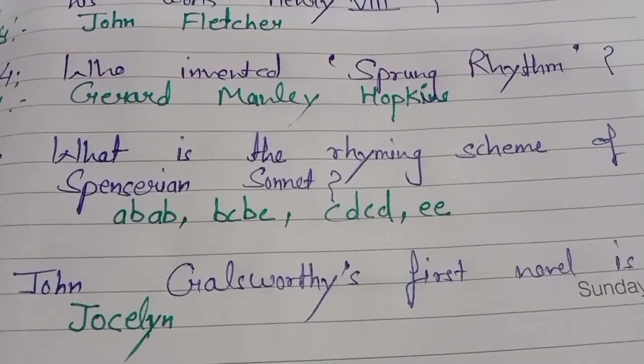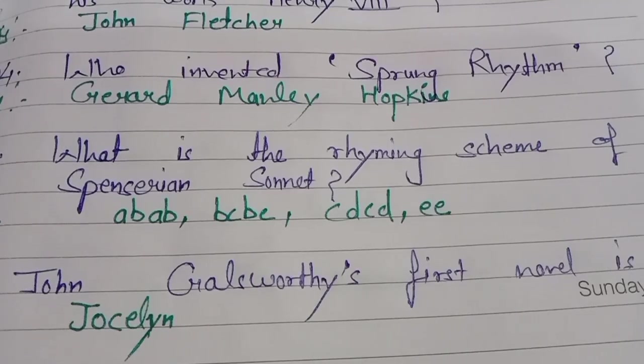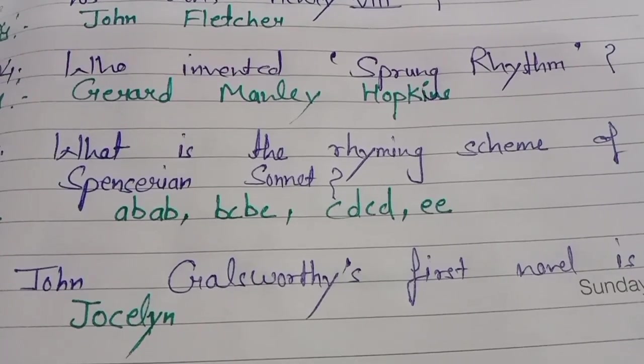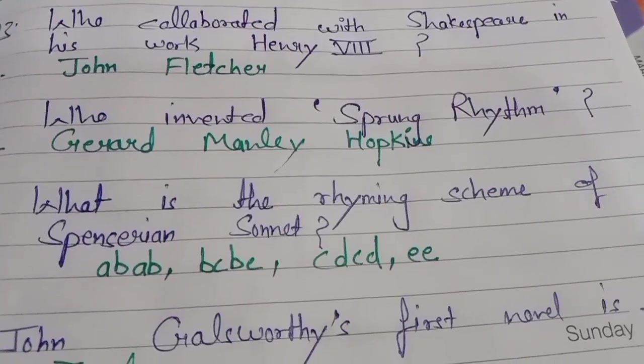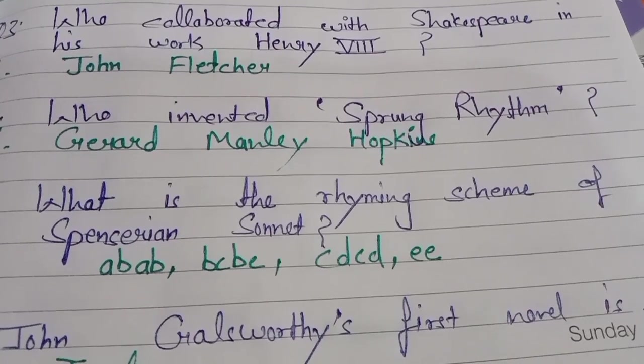The rhyme scheme of the Spenserian sonnet is: ABAB, BCBC, CDCD, EE. This is the rhyme scheme of the Spenserian sonnet.